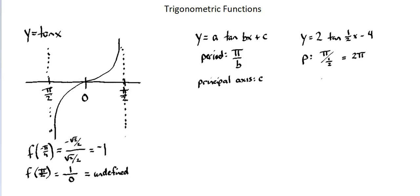We have vertical displacement going down. The principal axis is minus 4, and we will graph based on these factors.